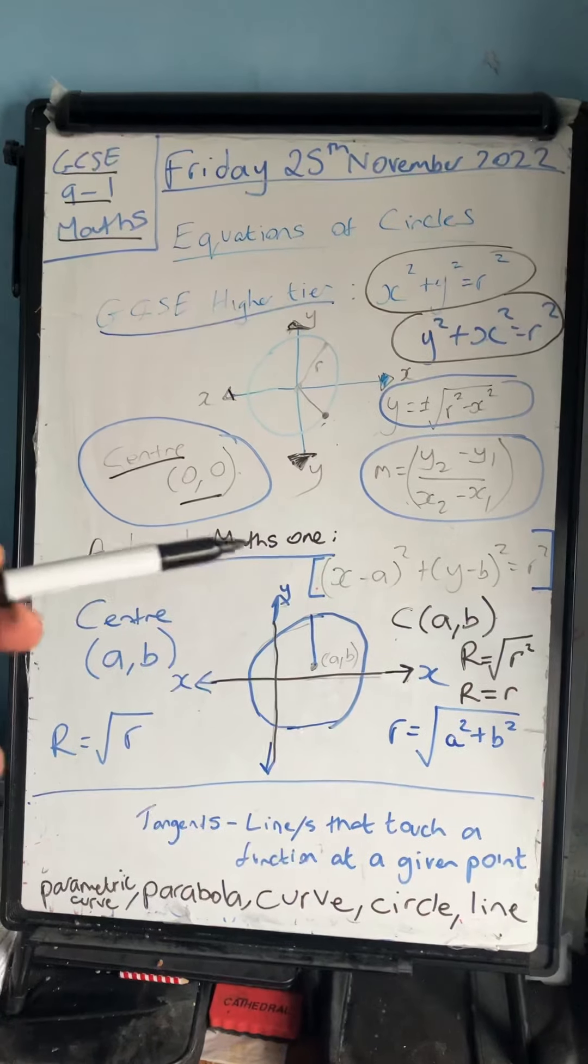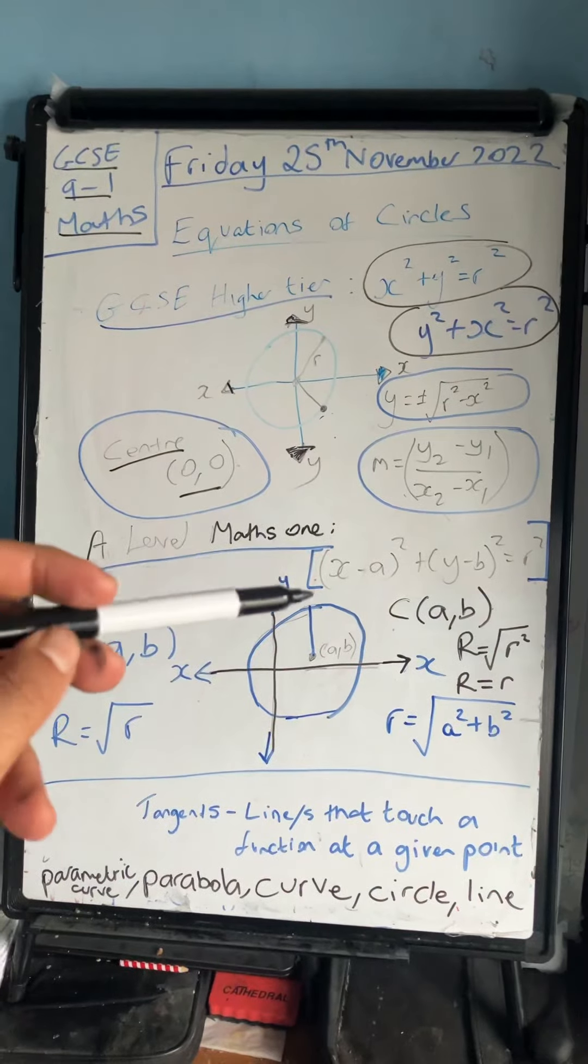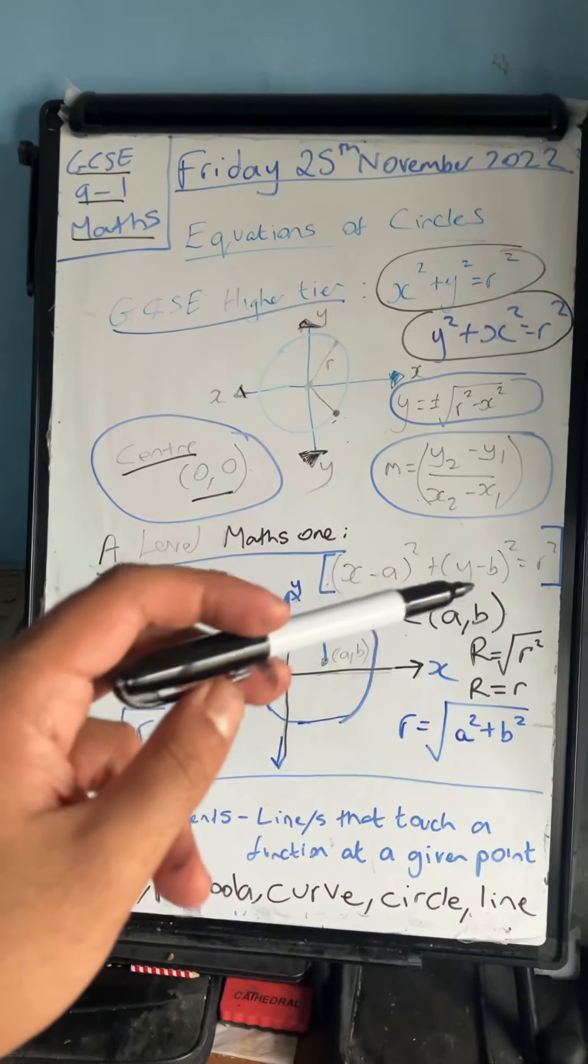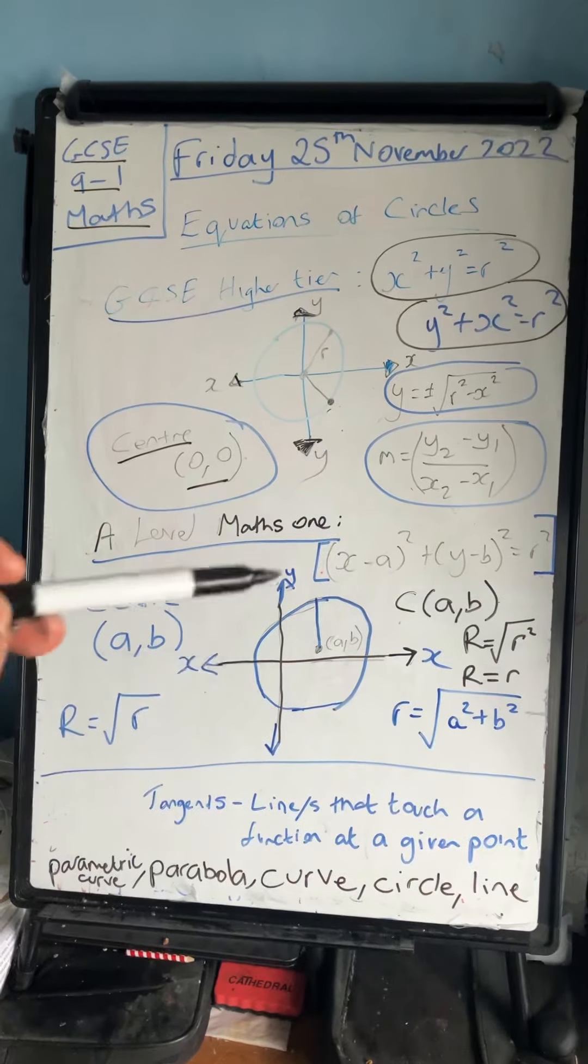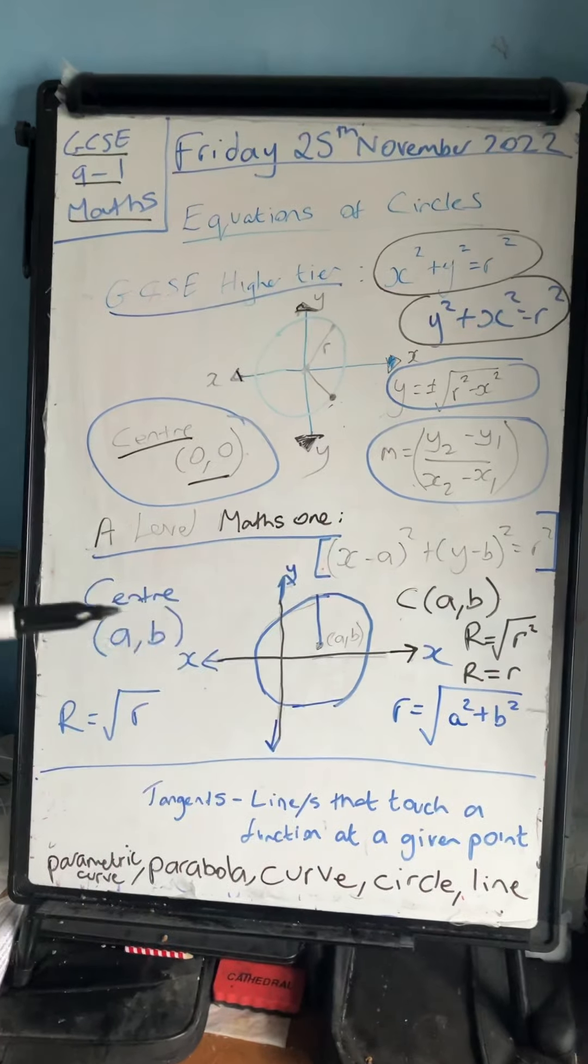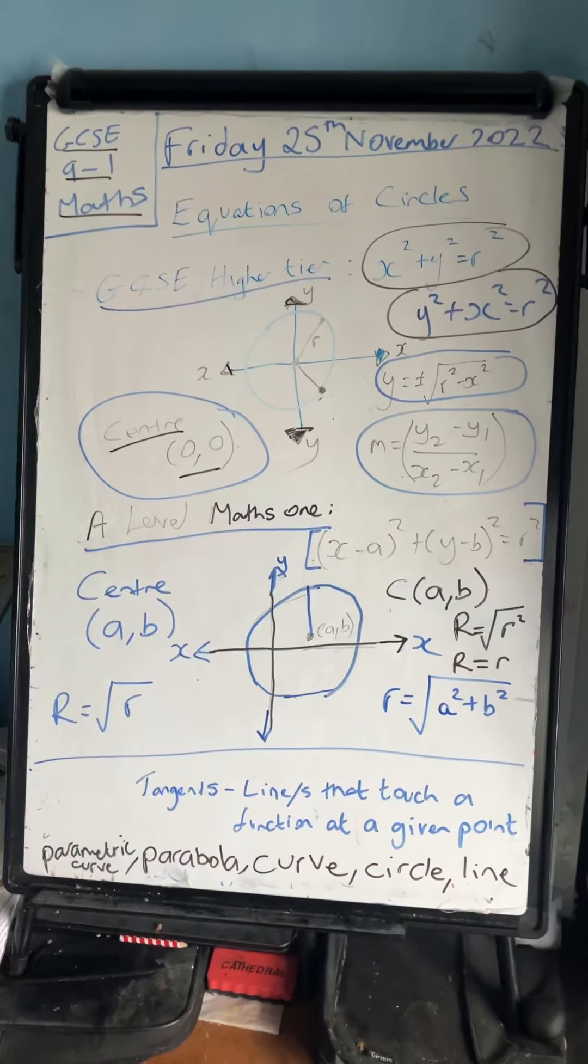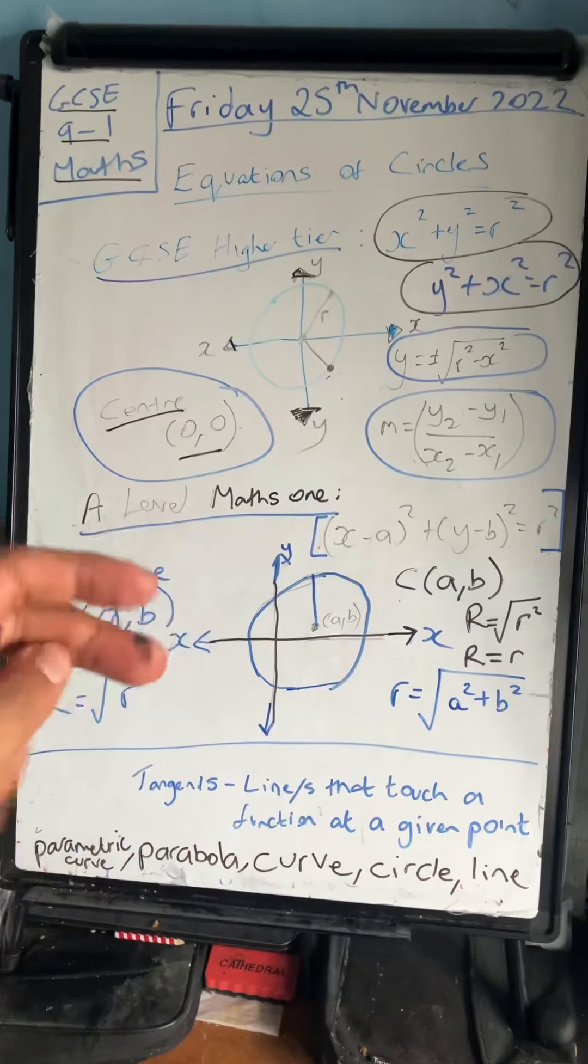For A-level maths, you might have x minus a all squared plus y minus b all squared equals r squared, where the center is at (a,b) - so it's not at zero zero here - and the radius again is the square root of r.